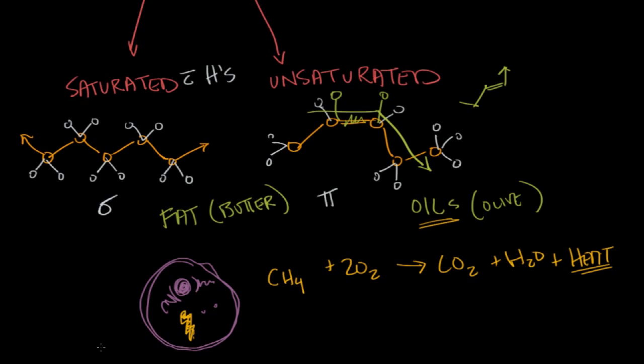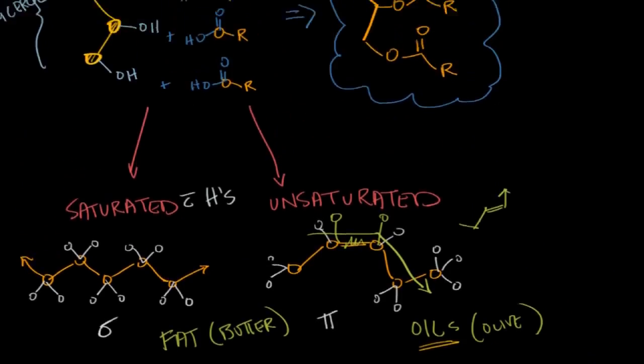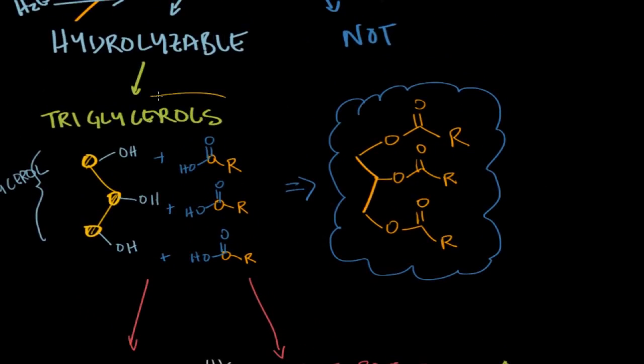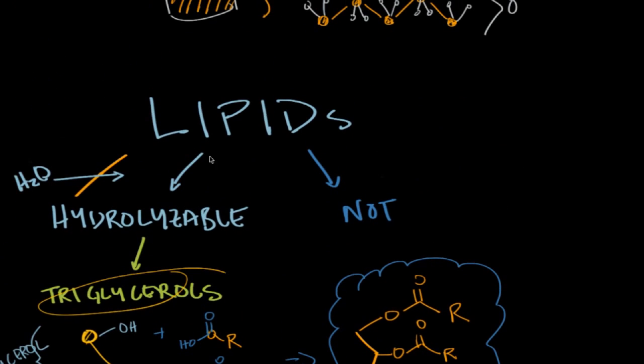So in our bodies, triglycerides store about nine kilocalories of energy, which is more energy than even carbohydrates or proteins store. They each store about four kilocalories. So really one of the main functions in our body of triglycerides, which are a type of hydrolyzable lipids, is energy storage.